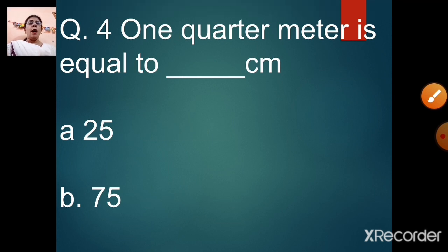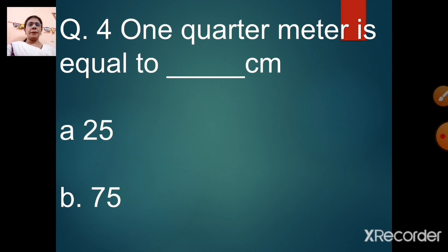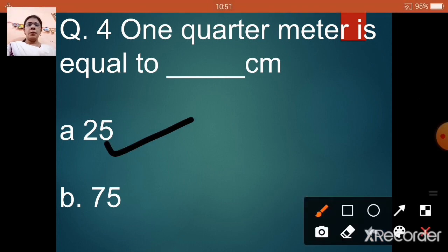Question number 4: 1 quarter meter is equal to dash centimeter. Option A: 25. Option B: 75. Now, 1 meter is equal to 100 centimeters. So 1 quarter — that is 1 fourth — of 100 will be 25 centimeters. 3 quarter meter is equal to 75 centimeter. So our answer is option A, 25.